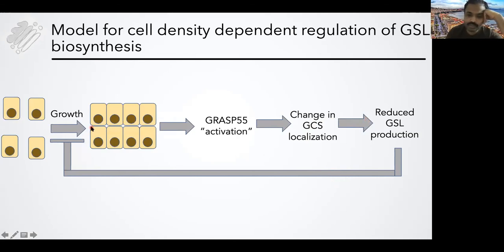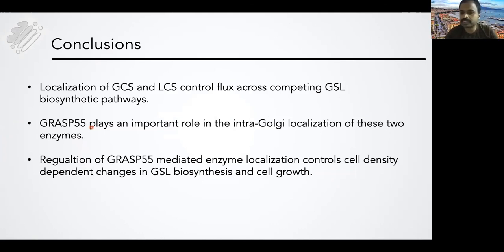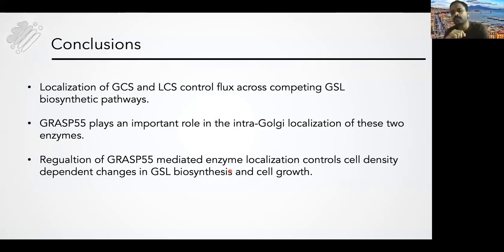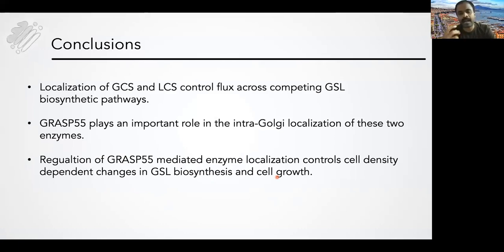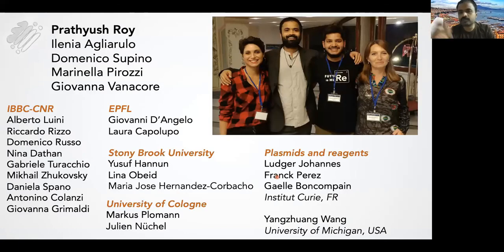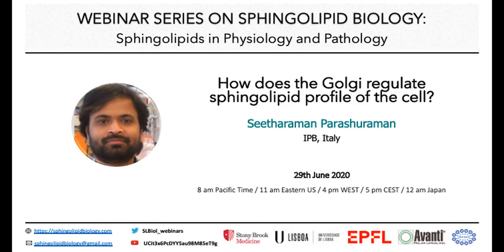The model we have: cells grow from sparse to confluent condition, somehow activating GRASP55 — we don't know how — leading to a change in GCS localization and glycosphingolipids, which affects growth. To conclude: localization of two enzymes, GCS and LCS, controls flux across the GSL biosynthetic pathway. GRASP55 plays a role in localization of these enzymes, and regulation of GRASP55 controls enzyme localization, which in turn controls cell density-dependent production of GSLs and cell growth. The Golgi plays an active role in controlling glycosphingolipid production. Most of this work was done by Pratyush, my PhD student. Thank you.